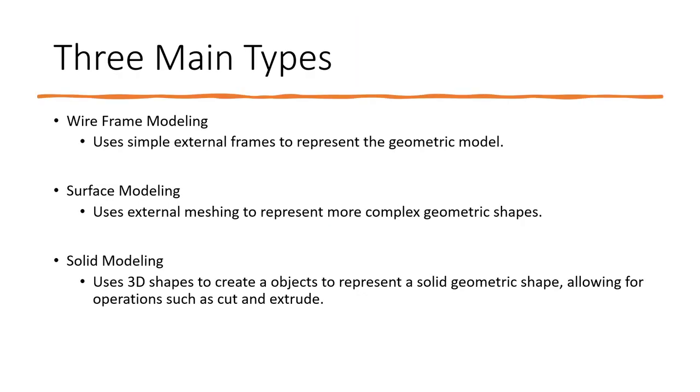So three main types here: wireframe modeling uses simple external frames to represent the geometric model; surface modeling uses external meshing to represent more complex geometric shapes; and solid modeling uses 3D shapes to create an object representing a solid geometric shape, allowing for operations such as cut and extrude.